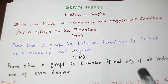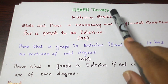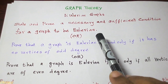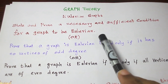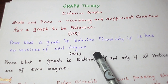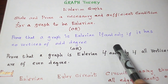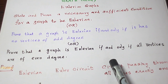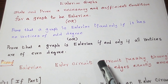Students, today let us see an important theorem from the topic Eulerian graphs from the chapter graph theory. The question is: state and prove a necessary and sufficient condition for a graph to be Eulerian. Equivalently, prove that a graph is Eulerian if and only if it has no vertices of odd degree, or equivalently, prove that a graph is Eulerian if and only if all vertices are of even degree.